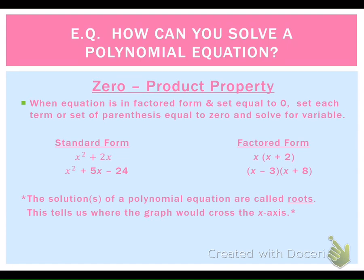We've already talked about polynomials. We know there are different kinds — monomials, binomials, trinomials — but they all fall under the umbrella of a polynomial. The property we're going to learn today is called the zero product property. This property goes into effect when an equation is in factored form and set equal to zero.